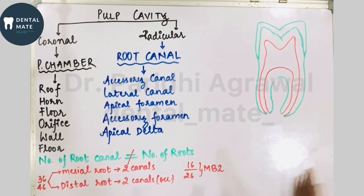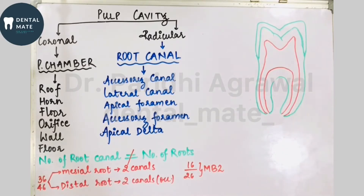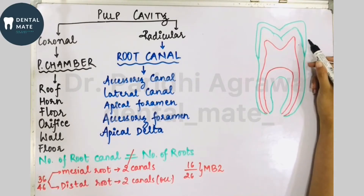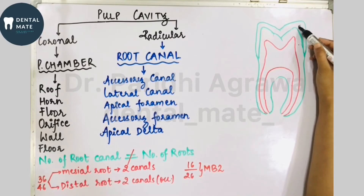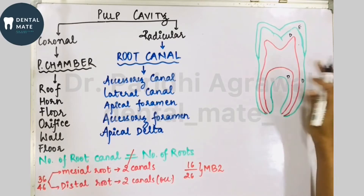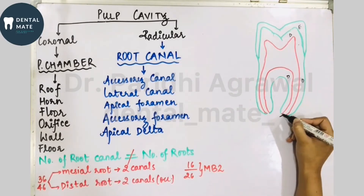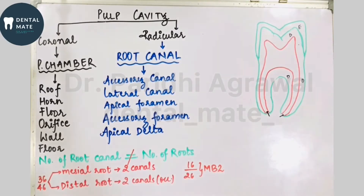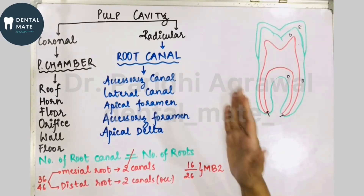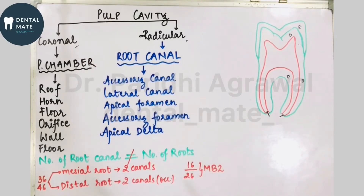In the crown region there is enamel, after that comes dentine, and after that is the pulp. The pulp in the crown is surrounded by enamel and dentine, whereas in the root it is surrounded by dentine all over — except at the apex. The pulp cavity can basically be divided into two parts: the coronal part and the radicular part.